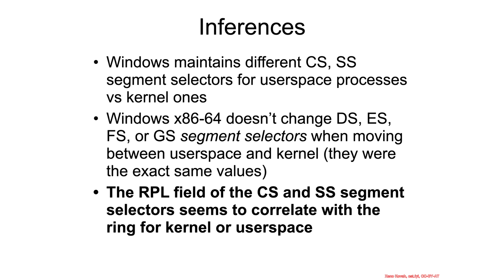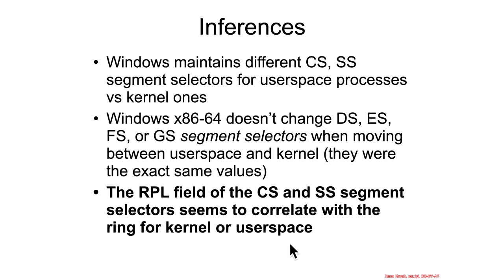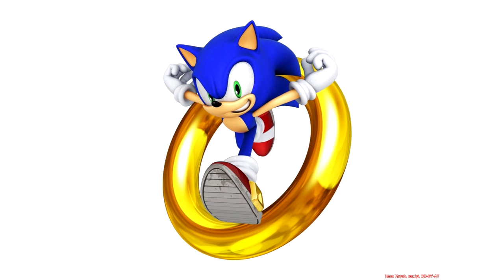Some inferences from this: Windows maintains different CS and SS segment selectors for user space and kernel space — different indices, 2 and 3 versus 6 and 5. Windows x86-64 doesn't seem to change the DS, ES, FS, or GS segment selectors when moving between user space and kernel space — noting that the segment selector is not all that could potentially change the definition of segments. The most important inference is that the RPL field of the CS and SS segments seems to correlate with the privilege ring for kernel and user space. This is our first information about how privilege rings work.